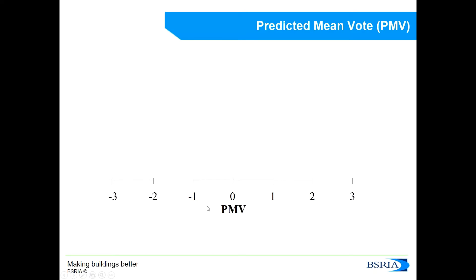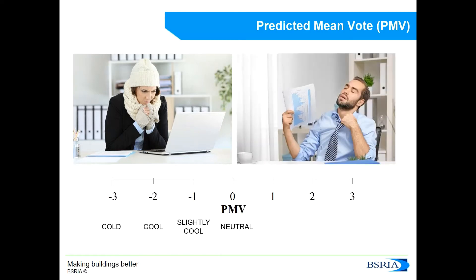To begin with the PMV, what we have here is the thermal sensation scale. The thermal sensation scale runs from minus three to plus three, in which zero means that a person would feel neutral with the environment. Minus one would mean they feel slightly cool, minus two that they feel cool, and minus three that they feel cold. On the other side of the scale, one, two, and three correspond to feeling slightly warm, warm, or hot. If we asked a lot of people how they feel in an environment and calculated the average, that would be the mean vote. The predicted aspect is because we do not ask people but predict how they are going to feel in advance.